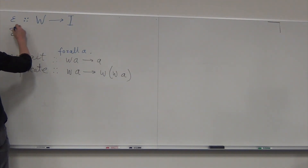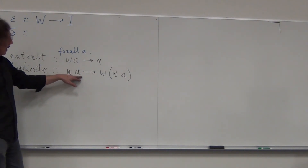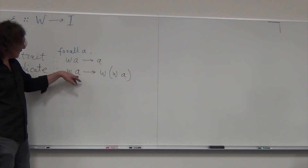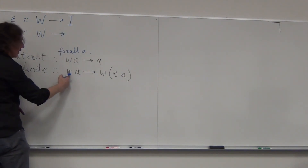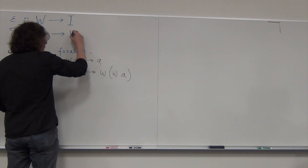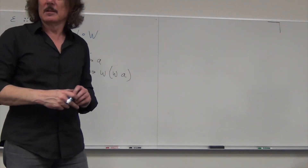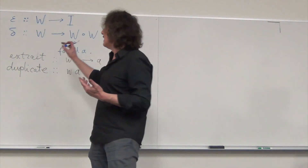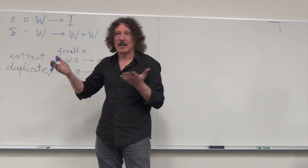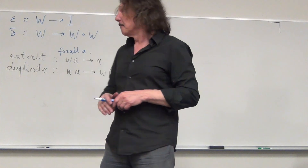Now duplicate is called delta, which is nice because both start with 'd'. Again, this is a natural transformation because it's a polymorphic function of a. This is a component of the natural transformation that goes from W to W squared — written as W² or W ∘ W. This is where the endofunctor comes in: with any other functor you wouldn't be able to square it, but with an endofunctor you can apply it as many times as you want.